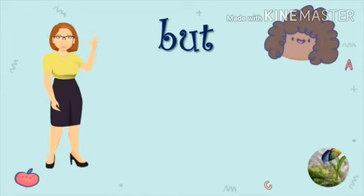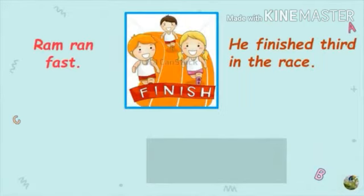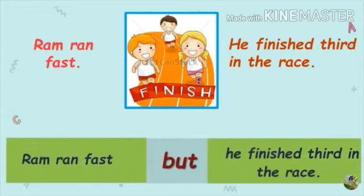The second conjunction we are going to learn is BUT. We use BUT to show a difference or opposite ideas. Here are some examples. Ram ran fast. He finished third in the race. Here we are talking about opposite ideas. When we combine these two sentences, our answer would be: Ram ran fast, but he finished third in the race.